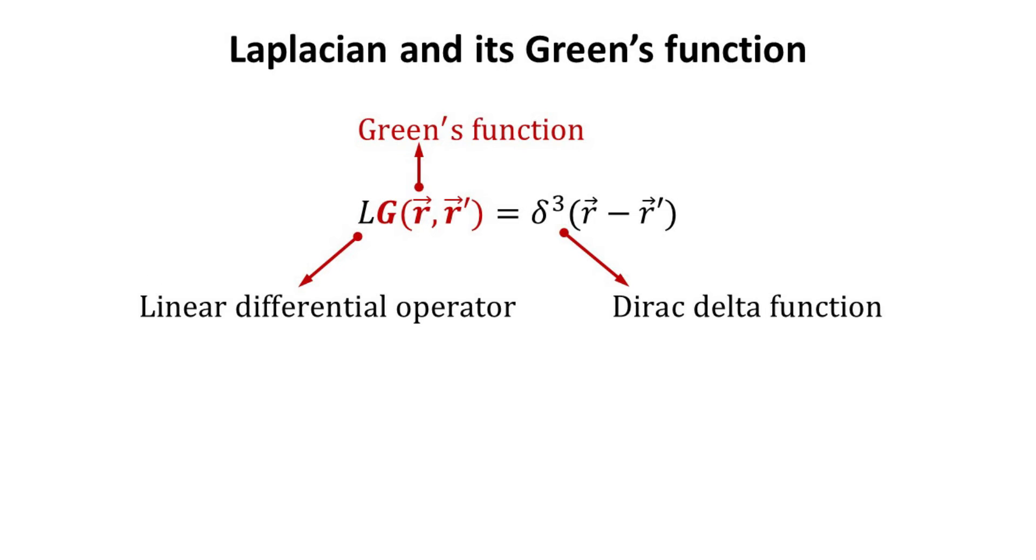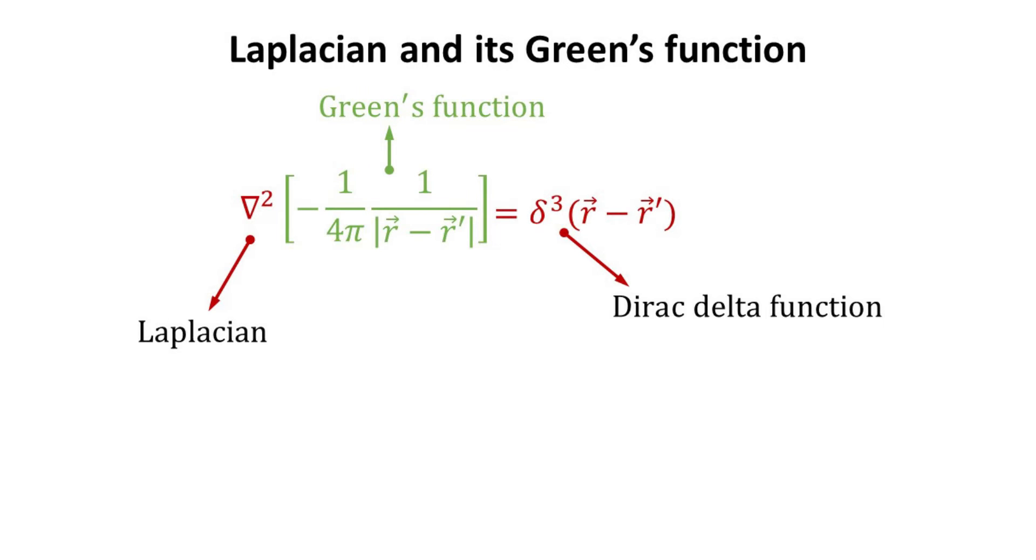The Green's Function, when acted by the differential operator L, would yield the Dirac Delta function. For the 3D Laplacian operator, the Green's Function is well-known, and is given as shown within the green bracket.